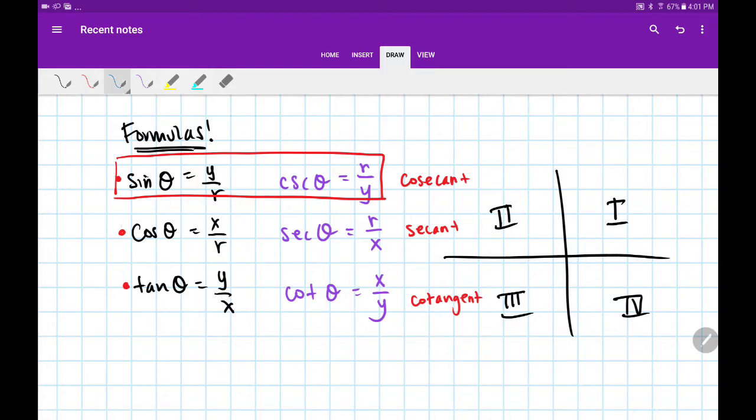The reciprocal of cosine is secant. So while cosine is x/r, secant is r/x.